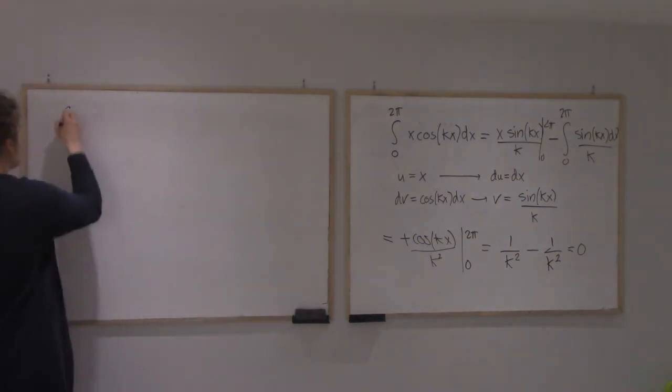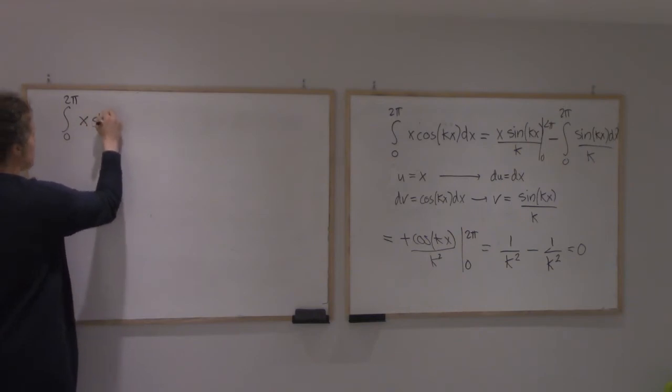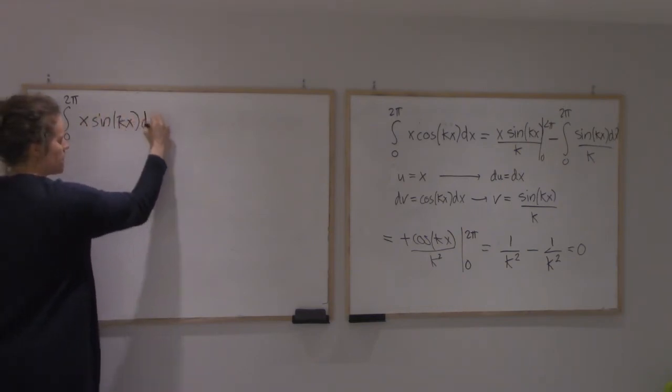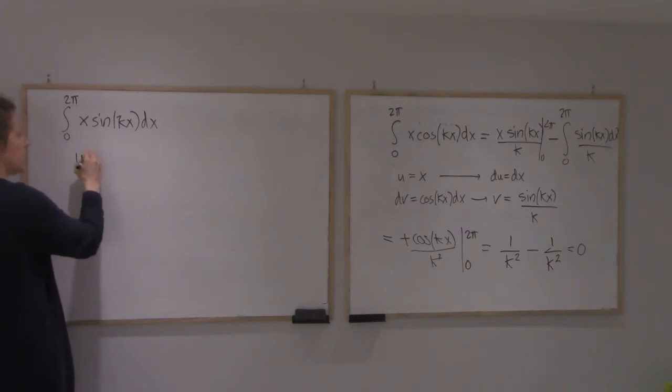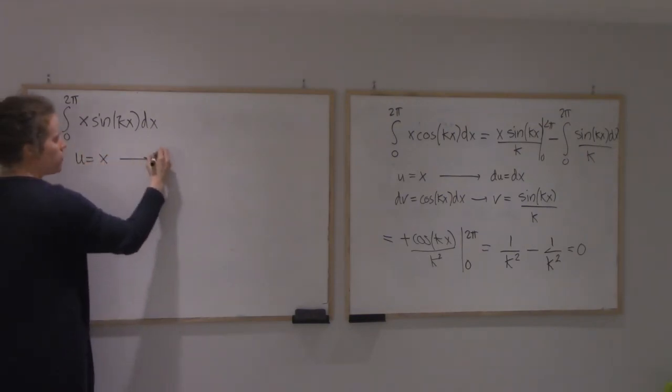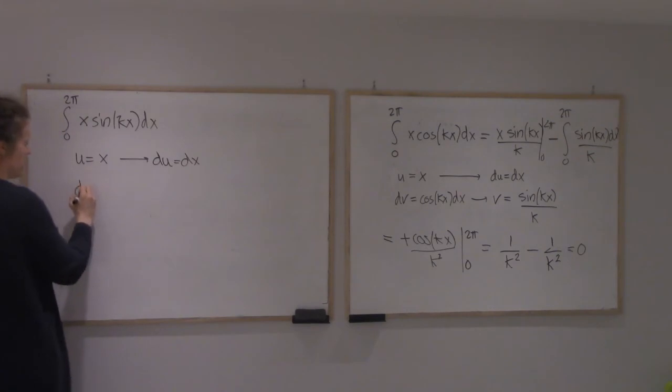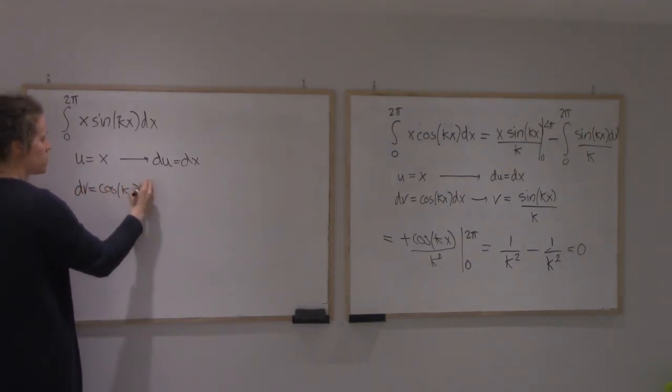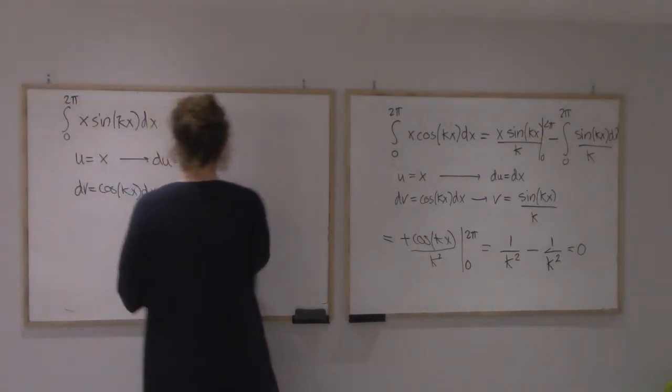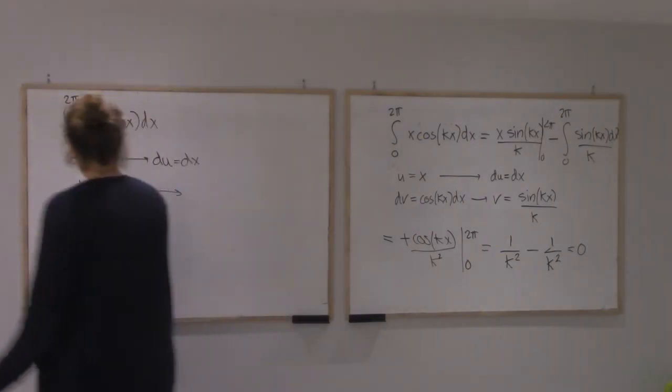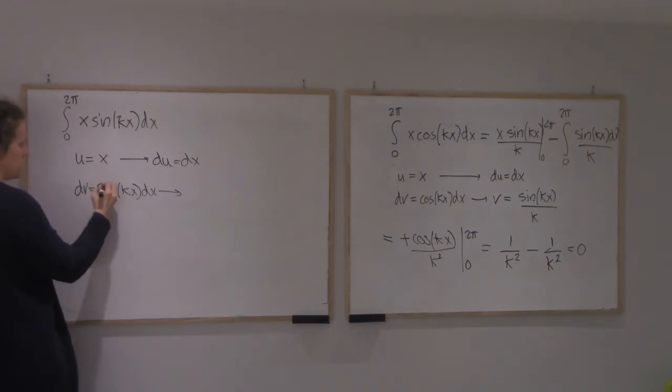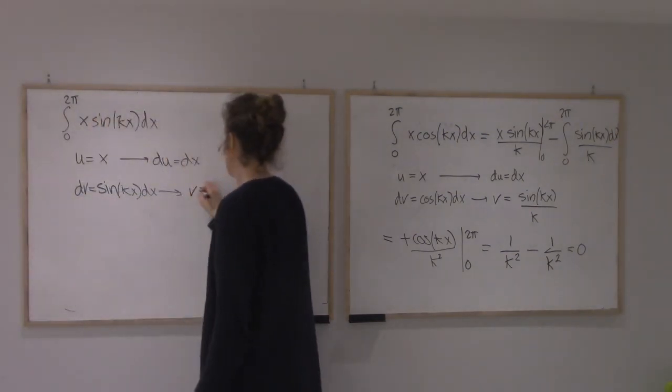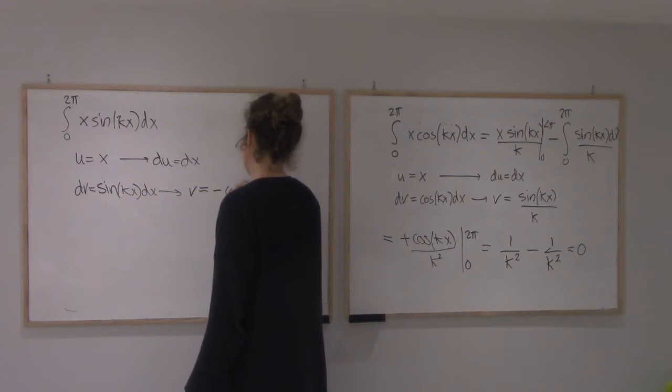So now if I look at 0 to 2π of x sin kx, the work will look a lot like that one, but I will not get 0. I was really just copying blindly. This is a sine. And so v is minus cos kx over k.